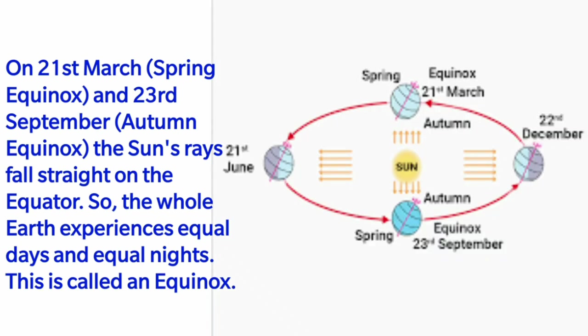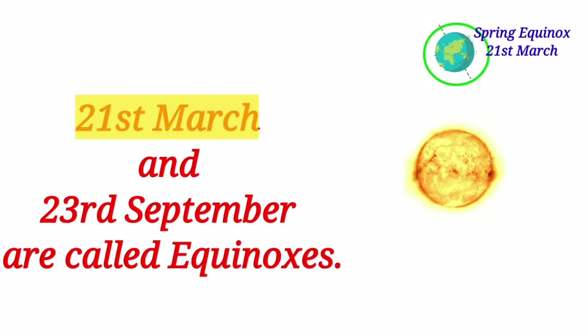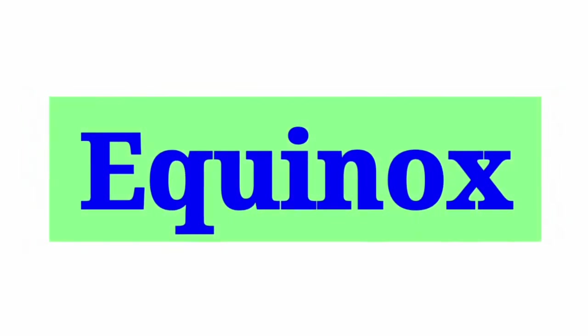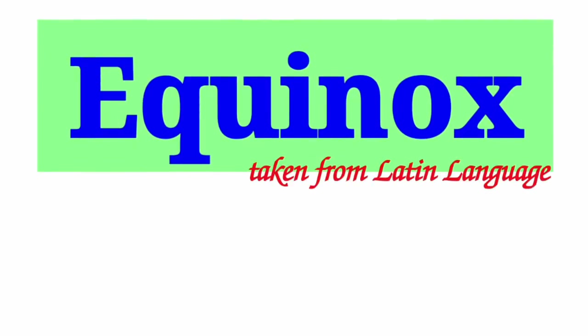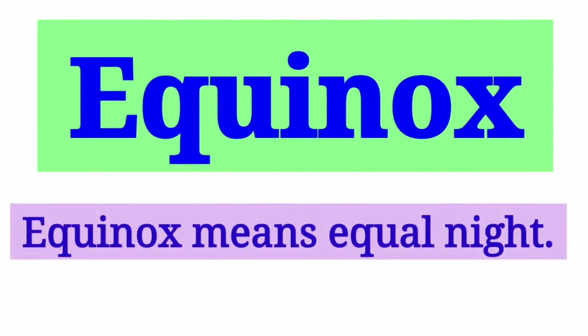As a result, throughout the earth, day and night are of equal length. That is why 21st March and 23rd September are called equinoxes. The word equinox is taken from the Latin language. Equinox means equal night.